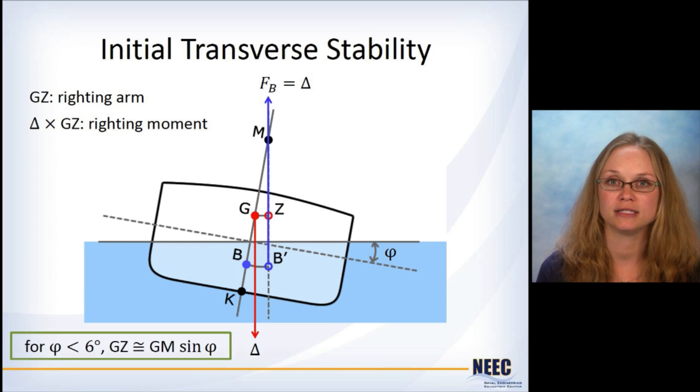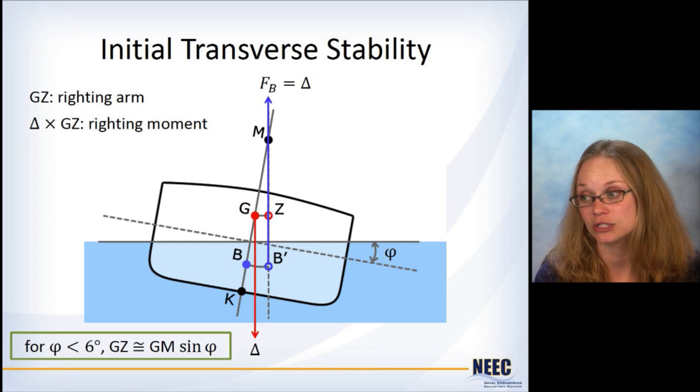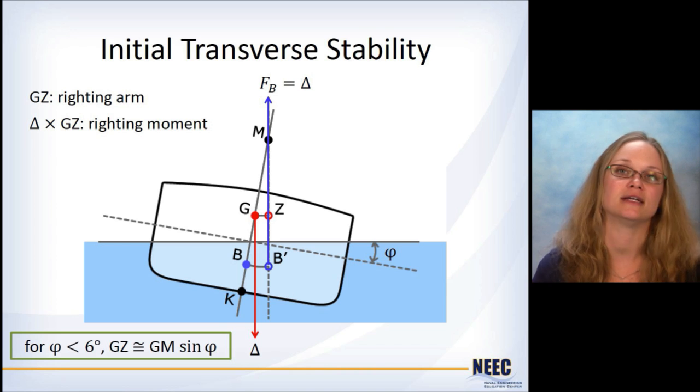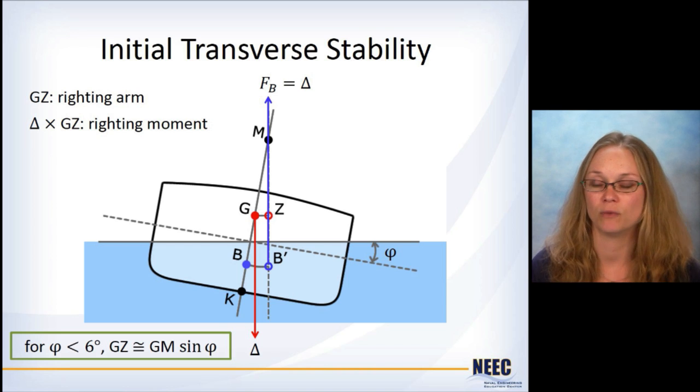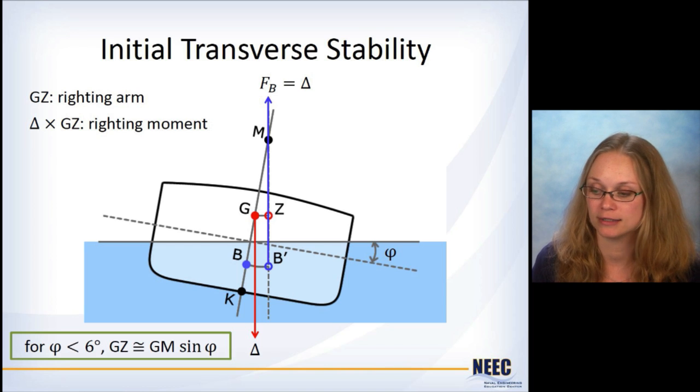Put where the center buoyancy is shifted over to, drew GZ, added in the arrows through which the buoyancy is acting and the weight is acting. And then we say, okay, GZ is the righting arm. And then the weight of the ship times GZ is the righting moment. That's actually what's going to cause the ship to go back upright.